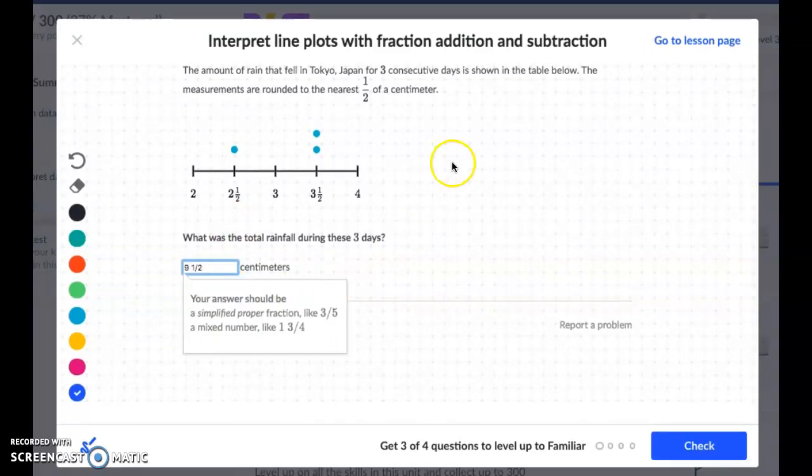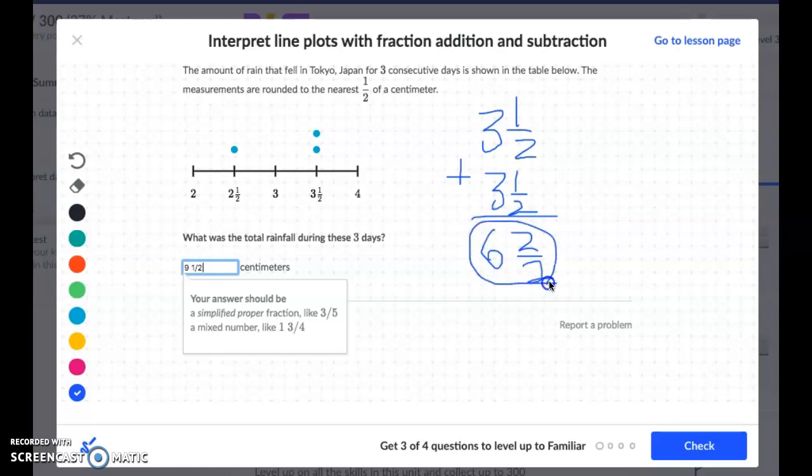Now could I have written all of this out and done 3½ plus 3½ and I would have gotten 2/2 and 6 and I would have known that that's a 7 and then adding my 2½. So we could have written it all out. If you can add it in your head then that's definitely okay to do. So our total here is 9½ centimeters because we're adding each of the days.